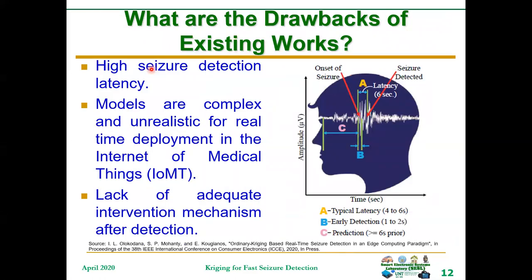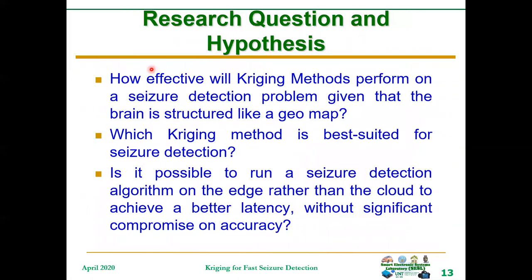The drawbacks of existing works include high seizure detection latency, models that are too complex and unrealistic for real-time deployment in the Internet of Medical Things, and lack of adequate intervention mechanism after detection. We find that Kriging methods have not been used in the literature for the detection of seizure, and it has also been discovered that the brain is structured like a geographical map.